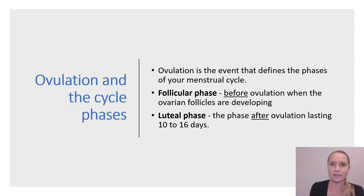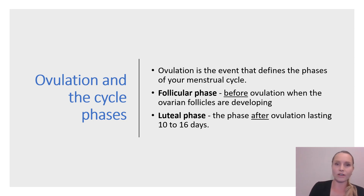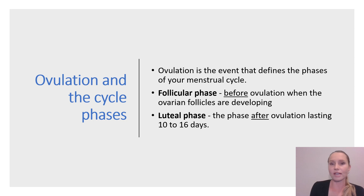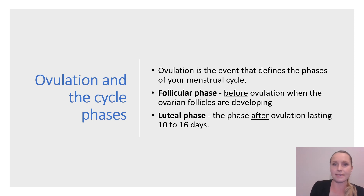Ovulation is the event that defines the phases of the menstrual cycle. The phase before ovulation, when the ovarian follicles are developing, is called your follicular phase, and the phase after ovulation is called the luteal phase. The length of the follicular phase may vary, but the luteal phase length after ovulation is generally constant from cycle to cycle, lasting about 10 to 16 days.